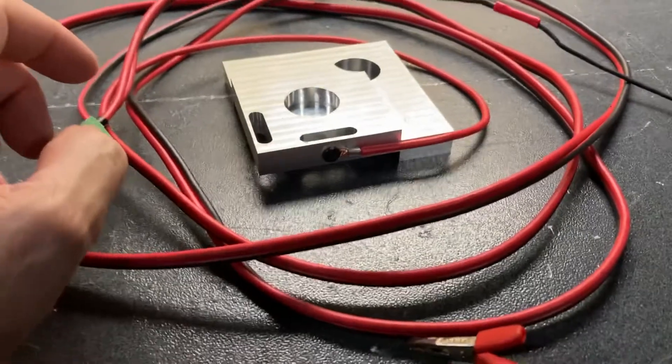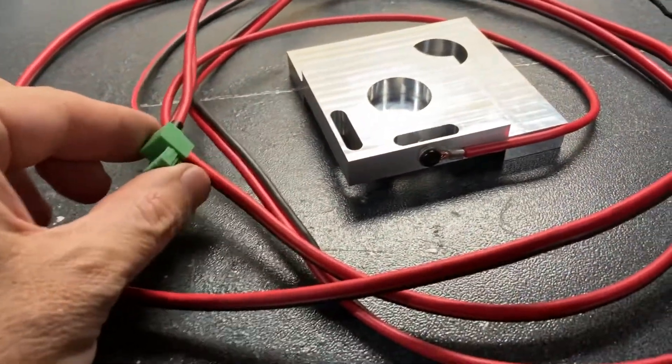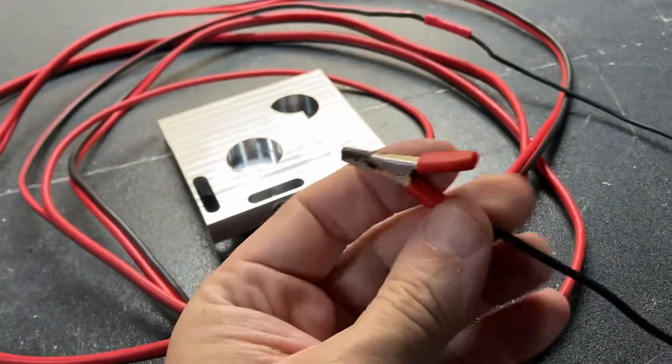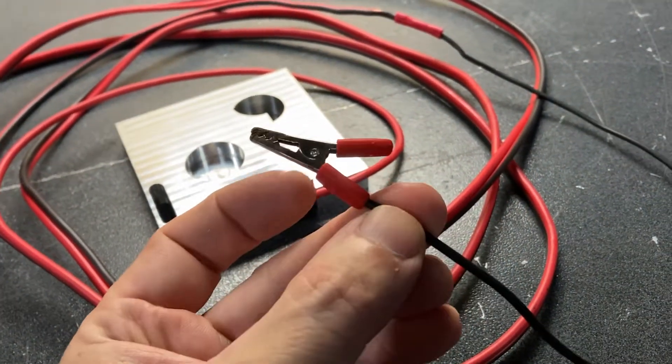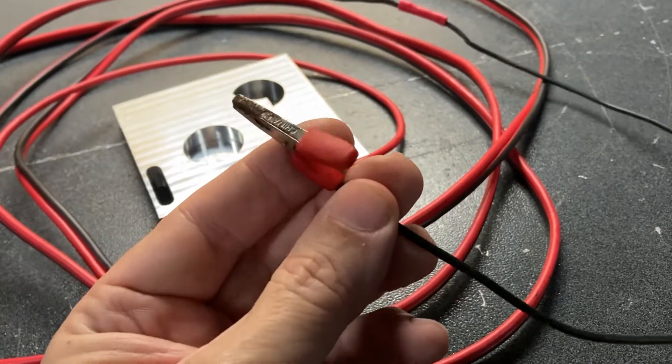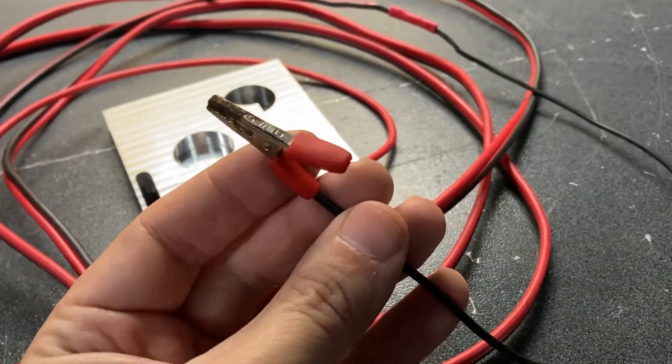But the other wire, the black wire, goes to a clip which you clip onto the spindle tool that you've got in there.